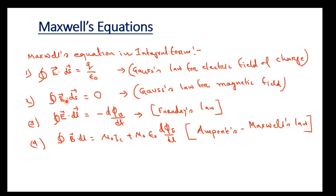The next one is ∮B·ds = 0. This is the Gauss law for magnetic field. The third one is ∮E·dl = −dΦ/dt. This is Faraday's law, which we already discussed in my last video.